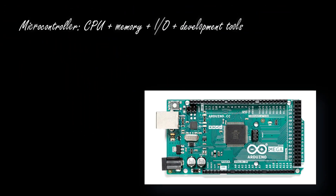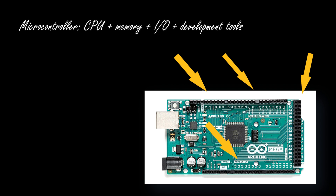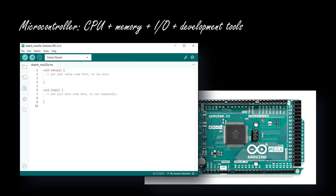What is a microcontroller? First of all, it's a complete computing system which includes the CPU — the central processing unit — the memory where the program and variables are stored, the input/output interfaces, which are very useful when interfacing with the external world, and a development tool which is very important in order to allow the user to develop applications.